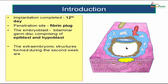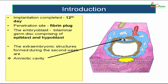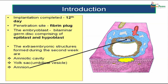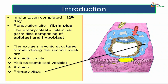Simultaneously, extra-embryonic structures are developing alongside the bilaminar germ disc. These include the amniotic cavity at the upper part, the yolk sac below the bilaminar germ disc — otherwise called the umbilical vesicle — and the amnion covering the amniotic cavity. You can also see the formation of primary villi, the initial stages of placental development. All these are outside the embryoblast, which is why we call them extra-embryonic structures formed during the second week.